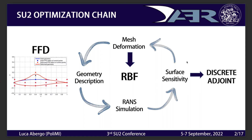Then you need to run a direct simulation — the primal flow loop — to know the flow solution and compute the objective function you want to minimize. You then want to know how the objective function changes if you move a certain part of the body. To do so, you compute the surface sensitivity using the discrete adjoint technique, which is coded with automatic differentiation using CoDiPack.